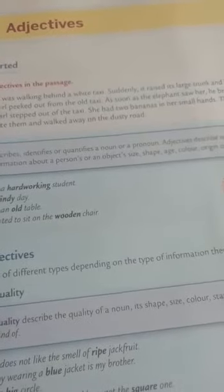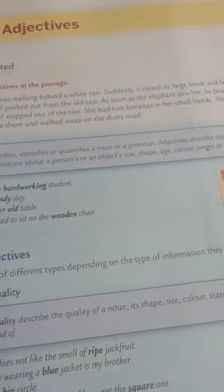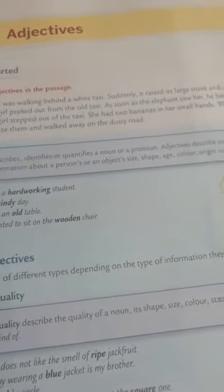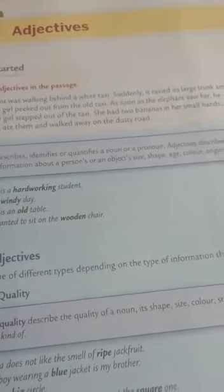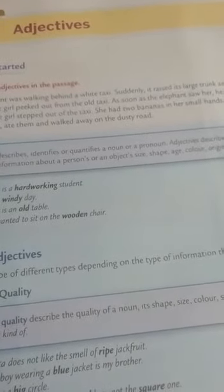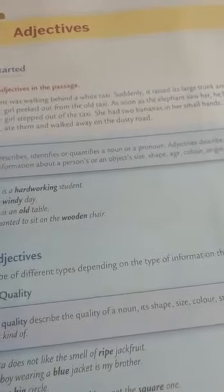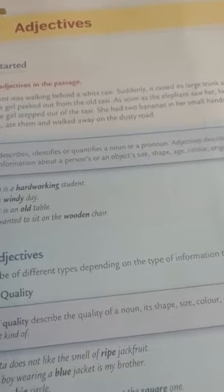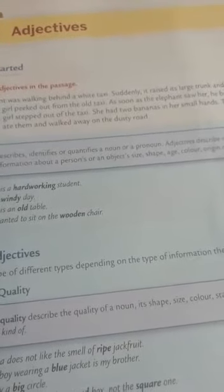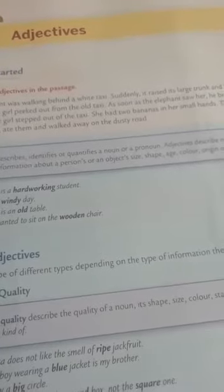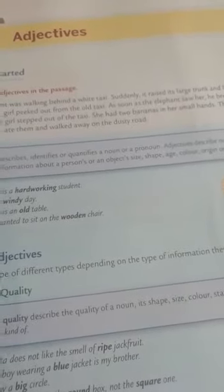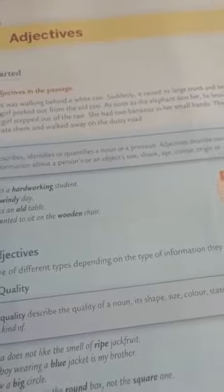Next, adjective of numbers. Adjective of numbers shows how many persons or things there are — these are called Cardinals. Adjective of numbers also shows the order of things — they are called Ordinals. Example: There are four little birds in the nest.